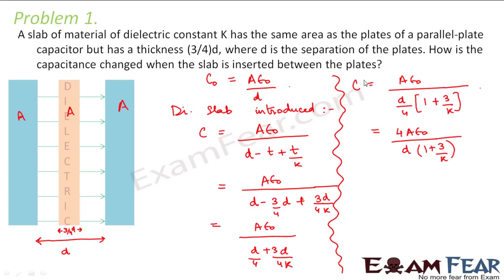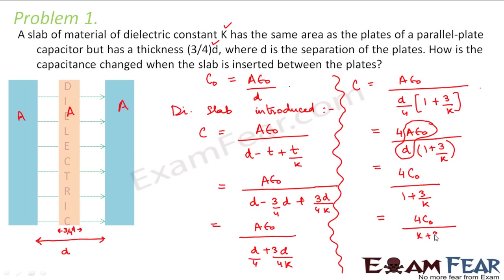This in turn can be written as 4·A·ε₀ divided by D·(1 + 3/K). We have to give the value of this capacitance in terms of the values given in the problem, that is in terms of K. Now A·ε₀/D is nothing but the old capacitance C₀, so this can be written as 4C₀ divided by (1 + 3/K), which equals 4C₀·K divided by (K + 3). Therefore the new capacitance C equals 4K/(K + 3) times the previous capacitance.